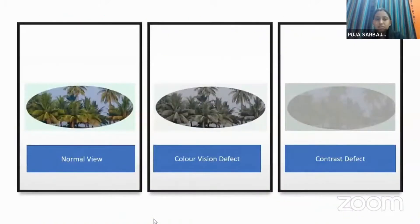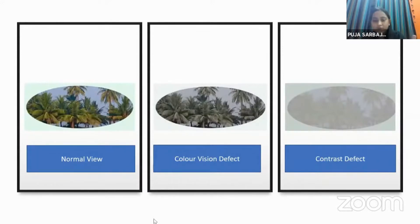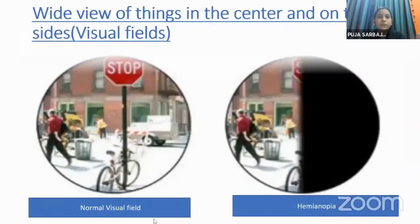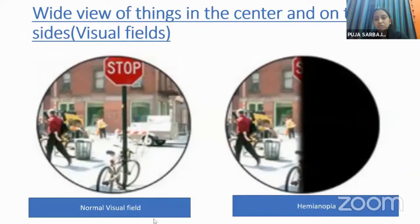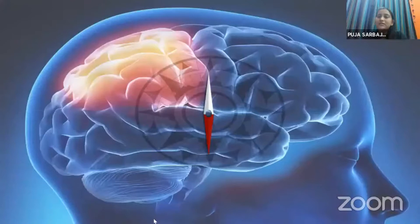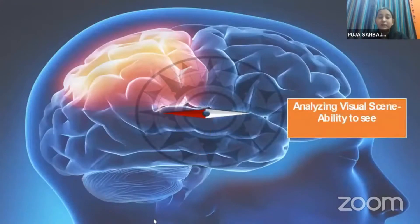A child with cortical visual impairment will see images with faded color and lost contrast compared to normal viewing. Another aspect is visual field — the first picture shows a normal visual field, and the second shows hemianopia. Now moving to Station 2, the parietal lobe, which helps with analyzing visual senses, 3D mapping of the visual world, and visual guidance or body movement.